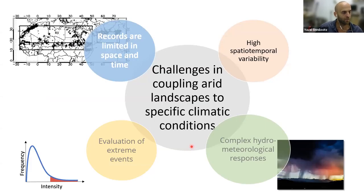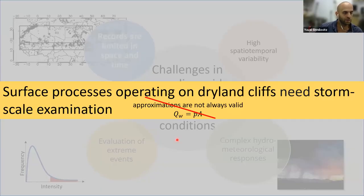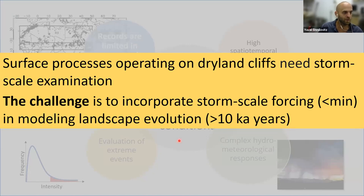To summarize all the challenges for coupling surface processes or landscapes to specific climatic conditions in deserts: there is high spatial and temporal variability of rainfall, complex hydrometeorological responses, evaluation of extreme events, and also limited records in space and time. Together these bring us to the reasoning that processes on dryland cliffs and slopes need storm-scale examination — approximations are often not valid in such areas. However, this brings a great challenge because storm-scale forcing operates at the scale of minutes or smaller, while landscape evolution operates on much larger timescales, creating computational challenges.